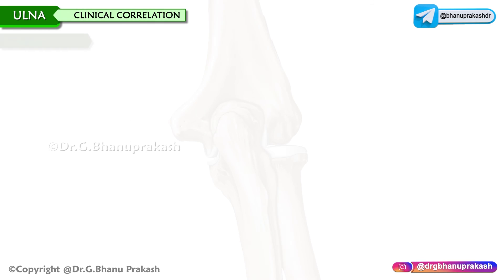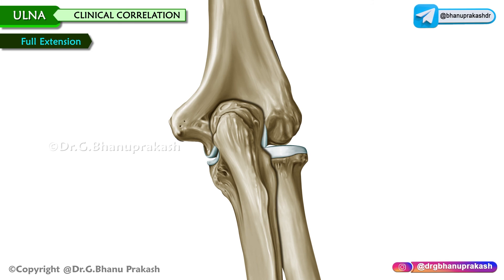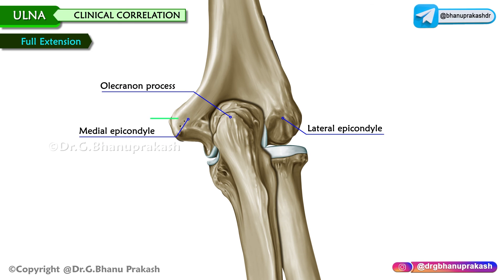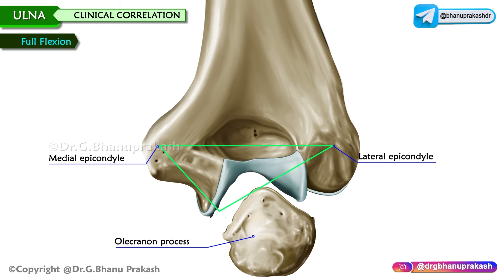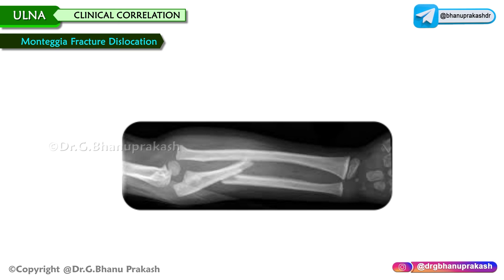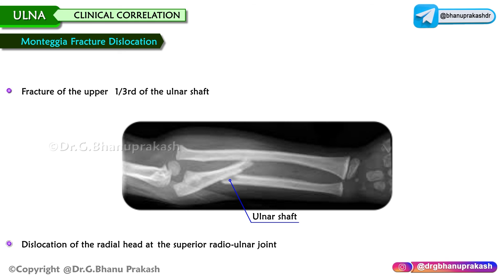Clinical correlation. When the elbow is in full extension, the tip of the olecranon process and the medial and lateral epicondyles are in the same horizontal line. When the elbow is in full flexion, these three bony points form an equilateral triangle. This relationship is disturbed in case of an elbow dislocation. Monteggia fracture-dislocation is a fracture of the upper one third of the ulnar shaft with dislocation of the radial head at the superior radioulnar joint.